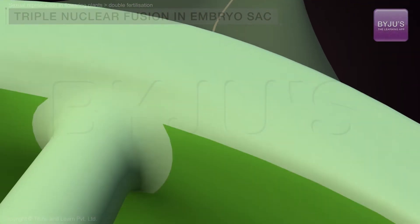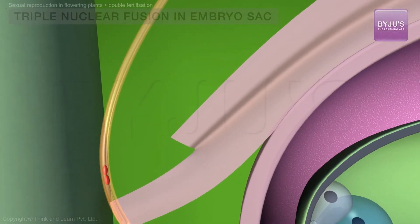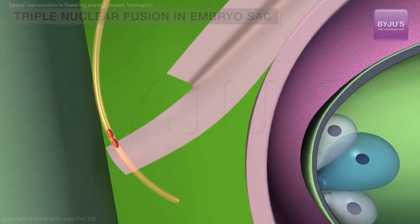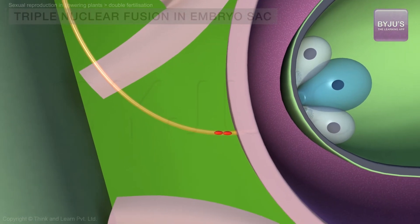As the male gamete approaches the embryo sac, its nucleus divides in two. And as the pollen tube reaches the ovule,